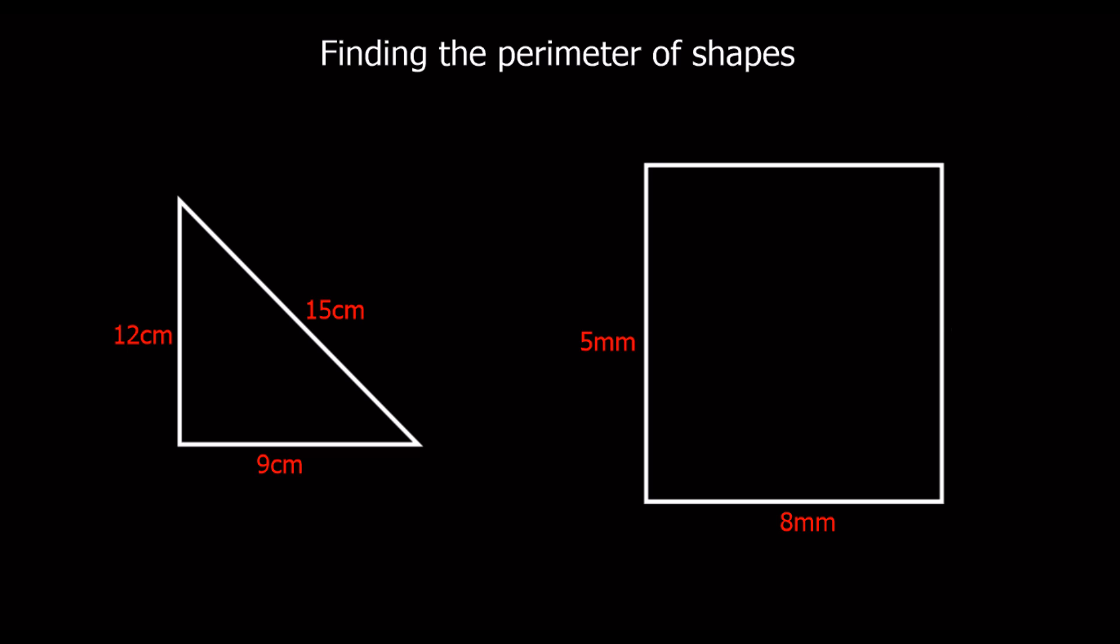Okay, so the triangle here, we've got 12, 9, and 15, so it's 12 plus 9 plus 15. It doesn't matter which order you add them up in, you're still going to get the same answer. So 12 and 9, 12 plus 9, that's 21, and then 21 plus 15 is 36 centimeters in this case. So the perimeter is 36.